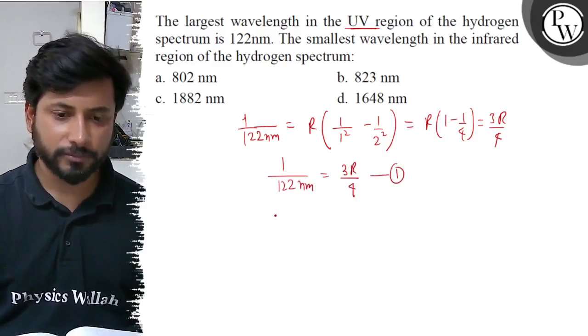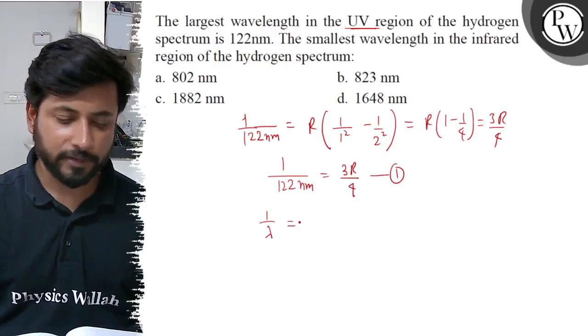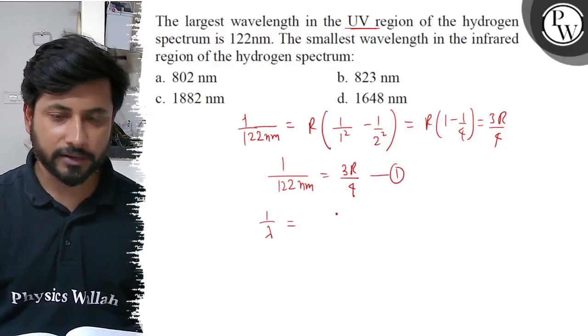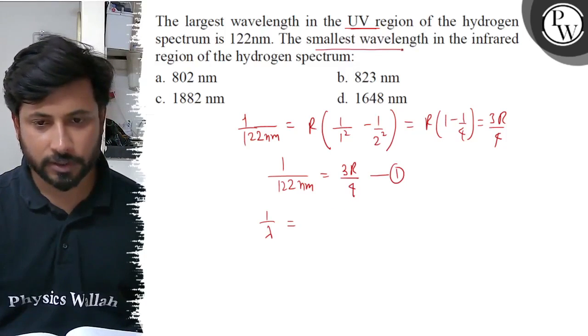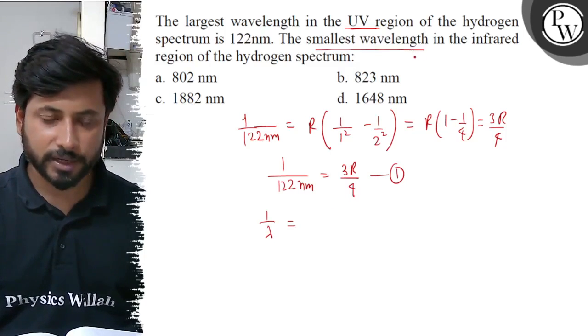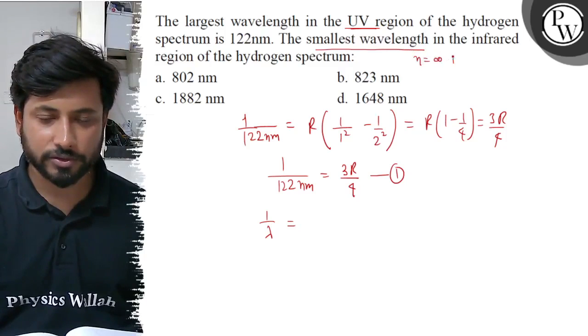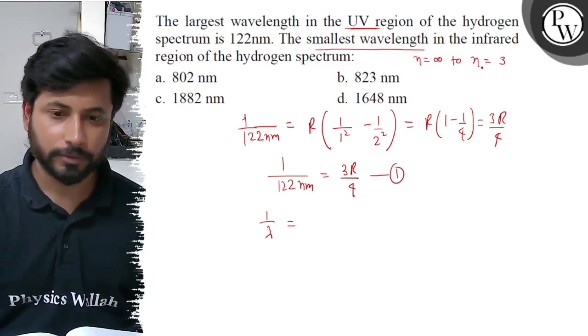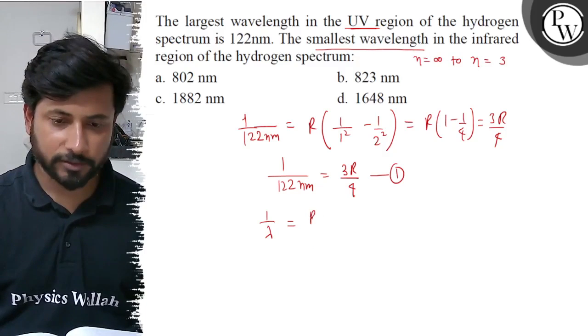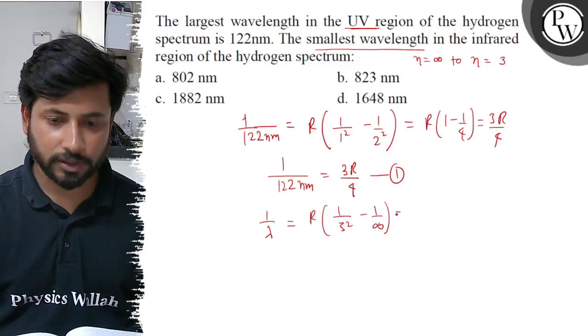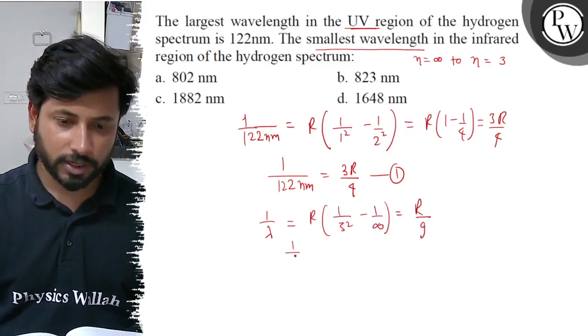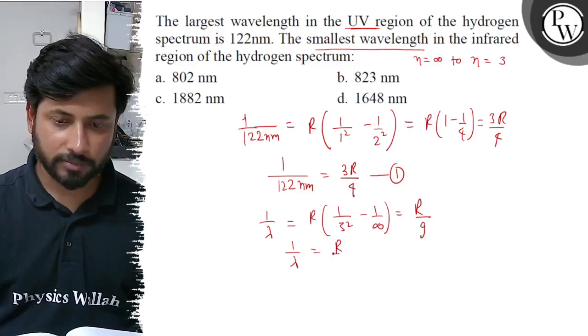In the second case, infrared region, the smallest wavelength means maximum energy, so n equals to infinity to n equals to 3. Here we put 1 by lambda equals to R, 1 by 3 square minus 1 by infinity. So here we get r by 9. Here 1 by lambda equals to r by 9. This is equation 2.